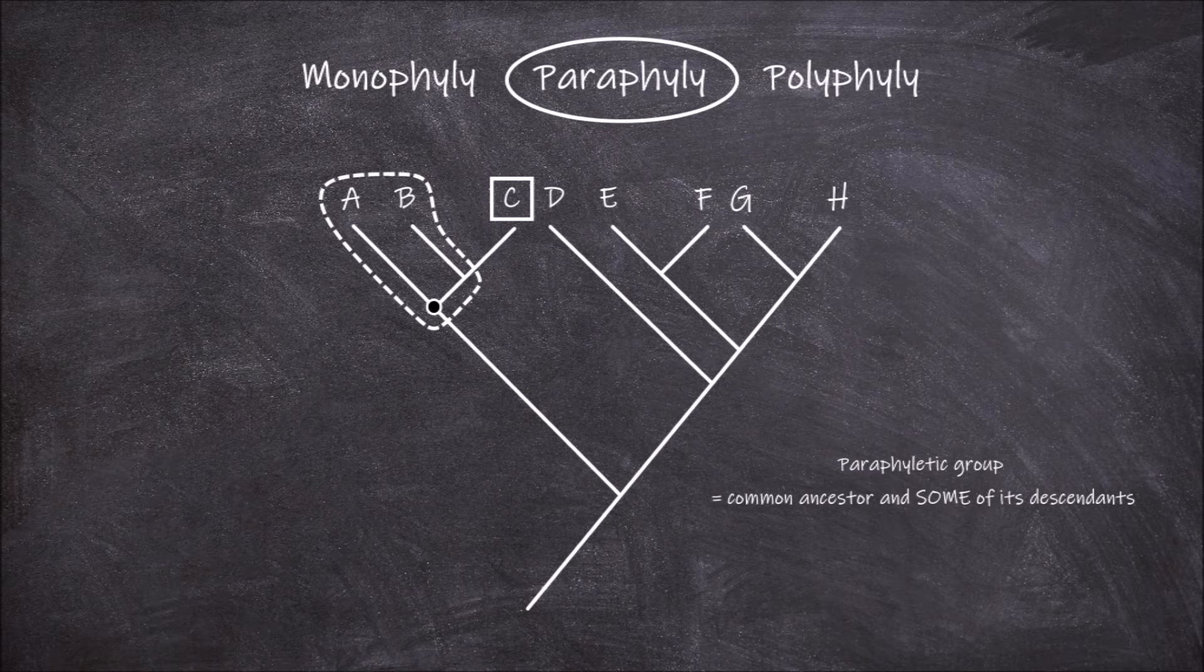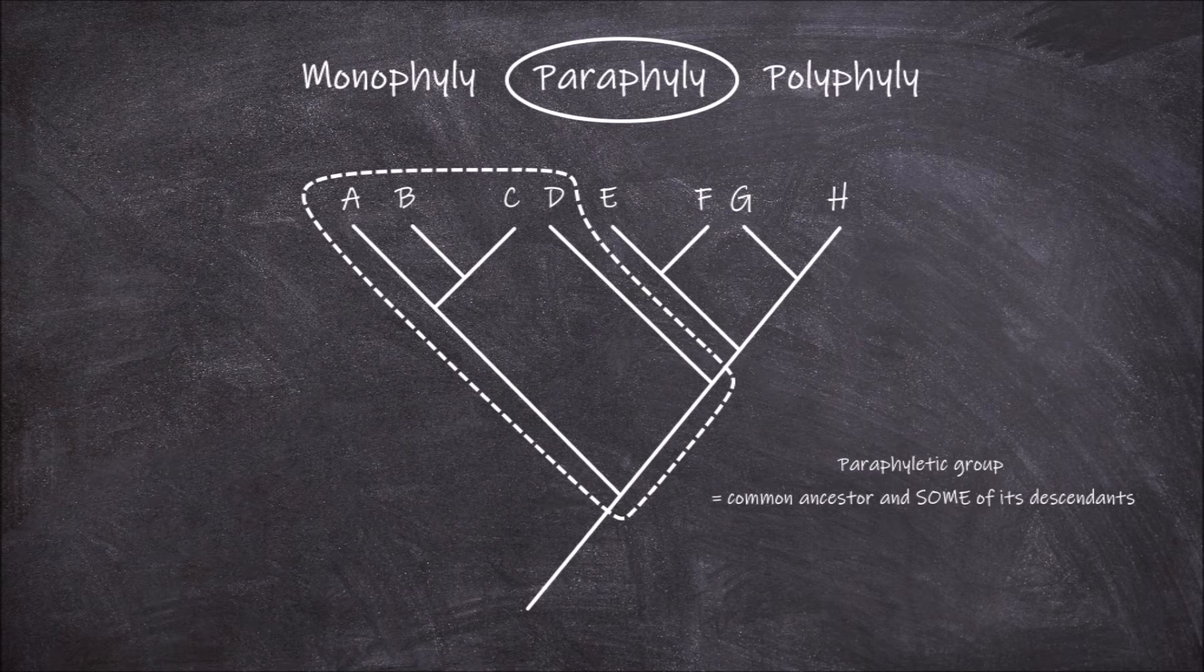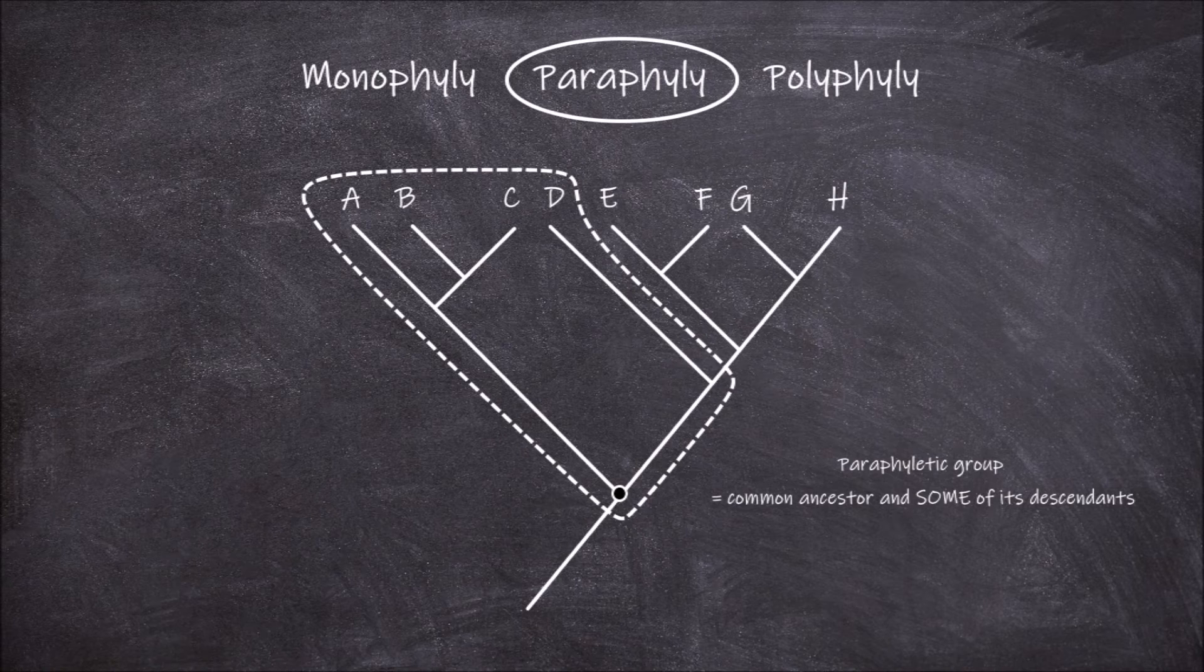Another example could be a grouping of A, B, C, and D. They share the same common ancestor at this node here but do not include all of the descendants of this common ancestor E, F, G, and H.